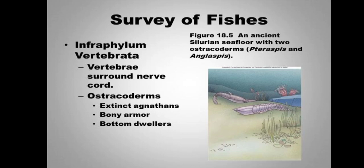Astracoderms are a class of infraphylum Vertebrata. These are fishes that are now extinct — they are extinct bony-armored fishes. They have bony flaps or plates present, which is why they are called bony-armored fishes. These are bottom dwellers. Here on the side, you can see a small view of extinct Astracoderms. The Silurian is the time period in which they existed.